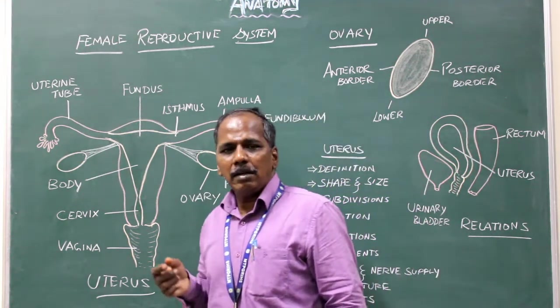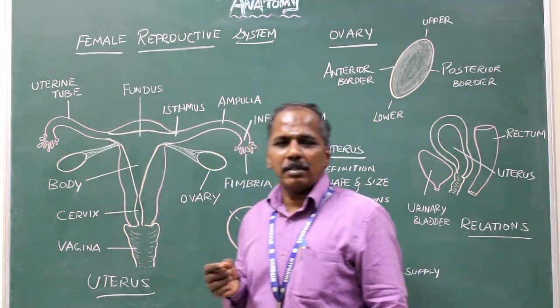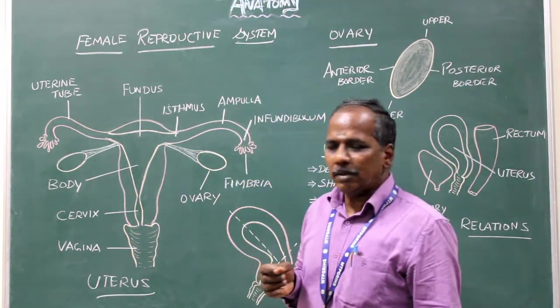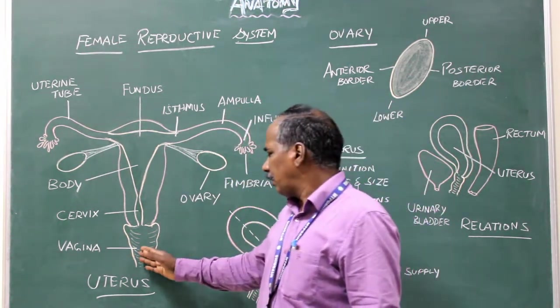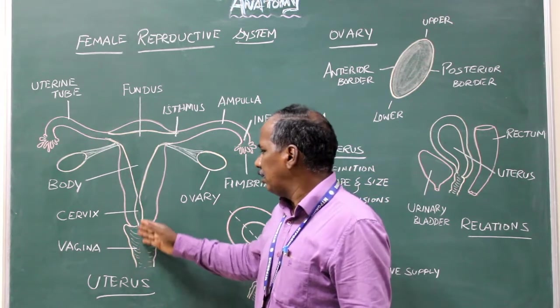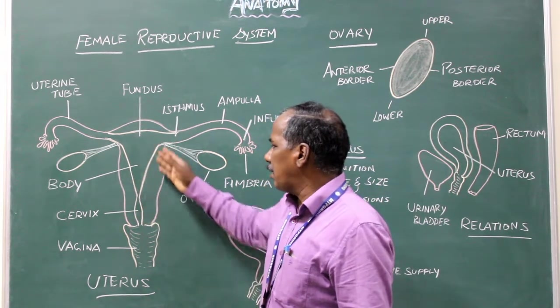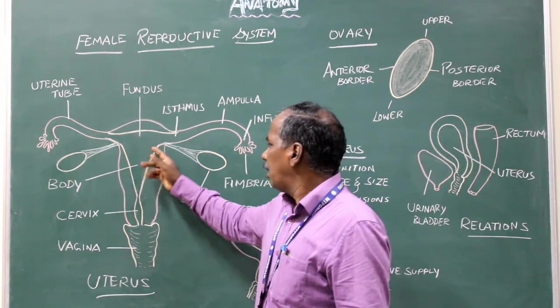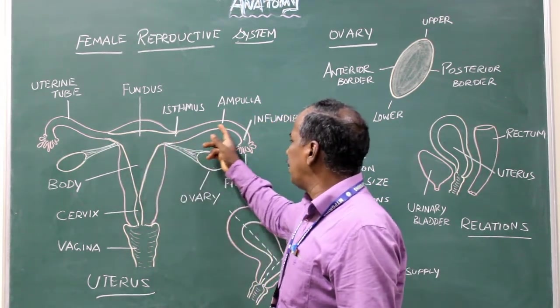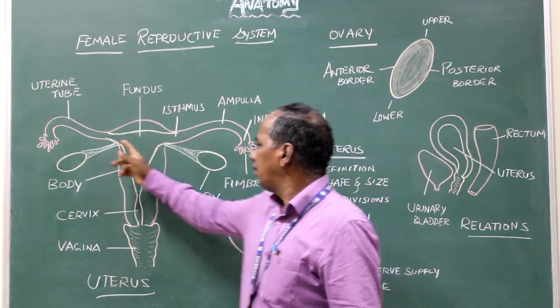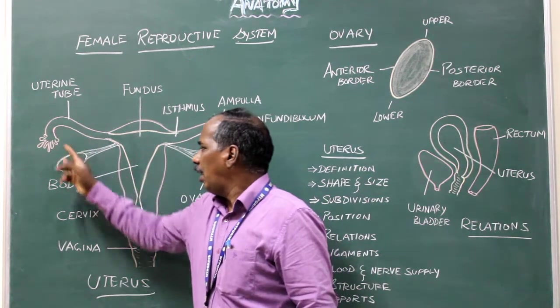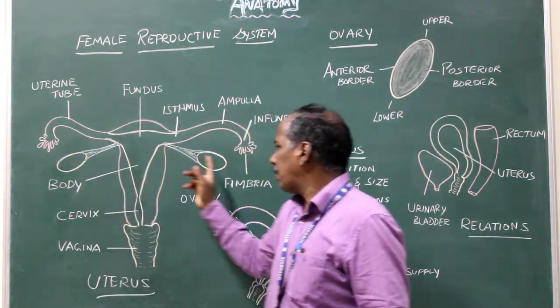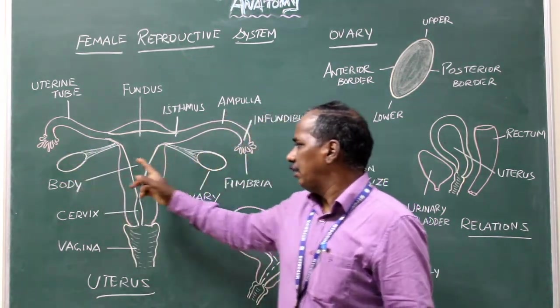The internal parts include vagina, uterus, uterine tube, and a pair of ovaries.